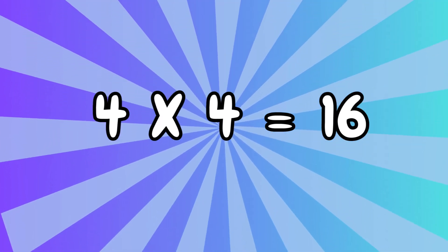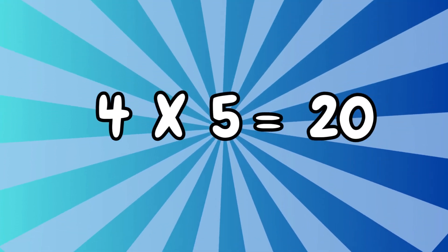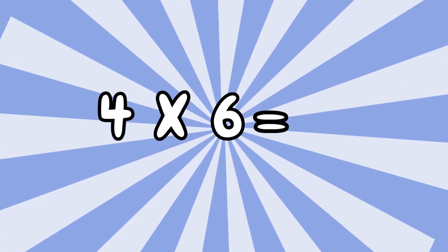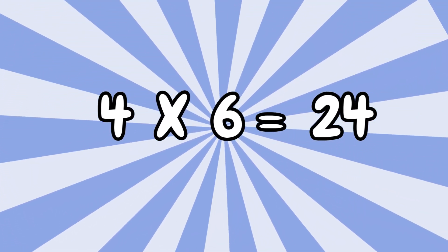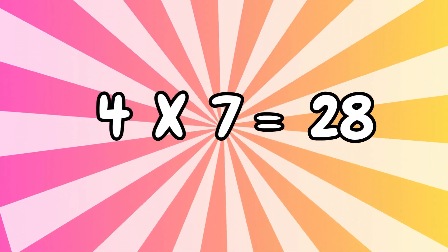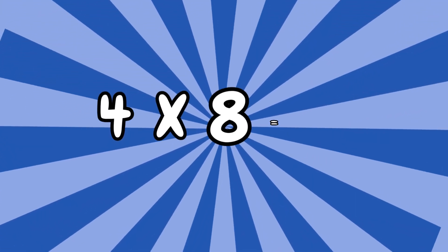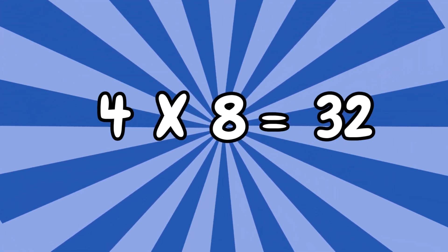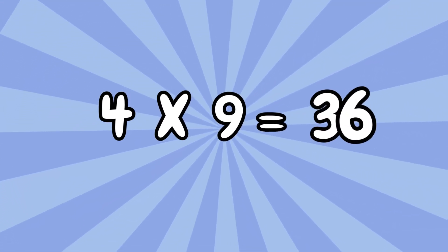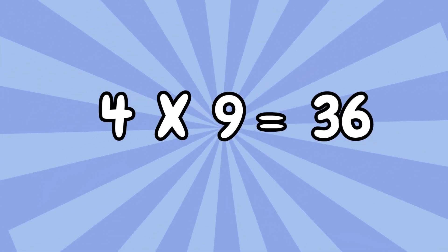Four fours are sixteen. Four fives are twenty. Four sixes are twenty-four. Four sevens are twenty-eight. Four eights are thirty-two. Four nines are thirty-six. Four tens are forty.